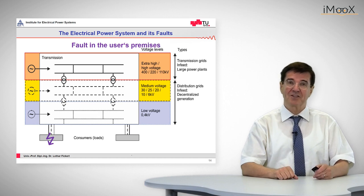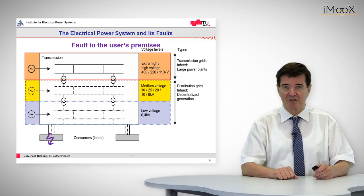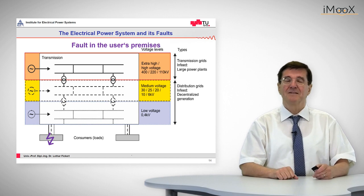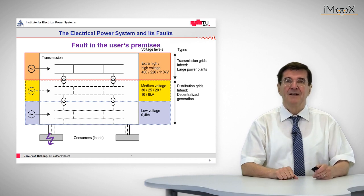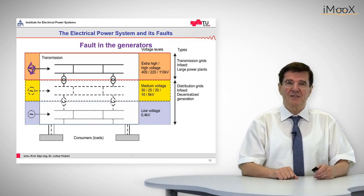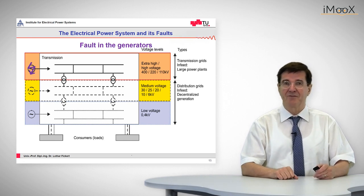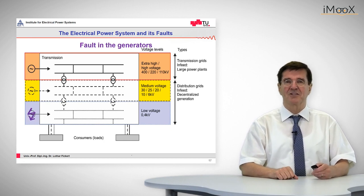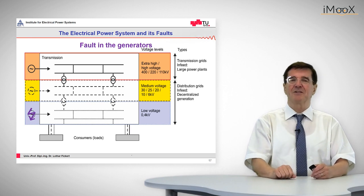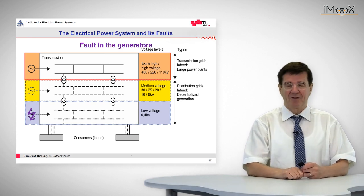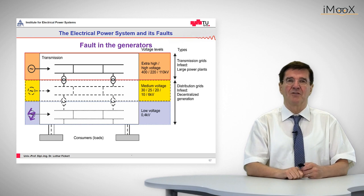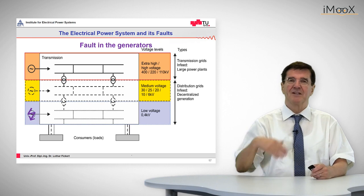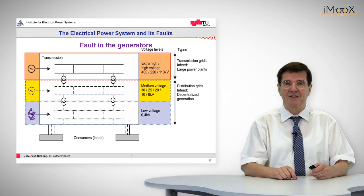It should be mentioned that faults in user premises are also observed. There can be faults in generators on high voltage, extra high voltage, medium voltage, and low voltage infeeds. These are not so severe to the power system because usually power stations or infeeds of electrical power are made in a redundant way. If one trips out, the others can easily take over the load.